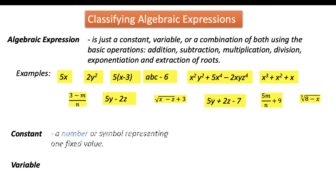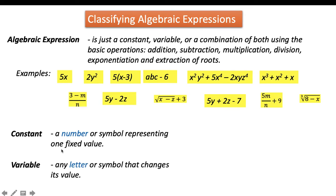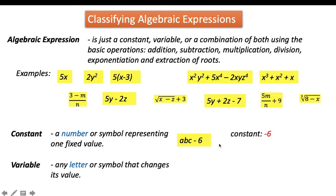What is meant by the word constant? A constant is a number or a symbol representing one fixed value. While a variable is any letter or symbol that changes its value. For example, in the algebraic expression abc minus 6, the constant is negative 6 — it is a fixed number that cannot be changed. The variables are a, b, and c. These are letters that represent unknown numbers.